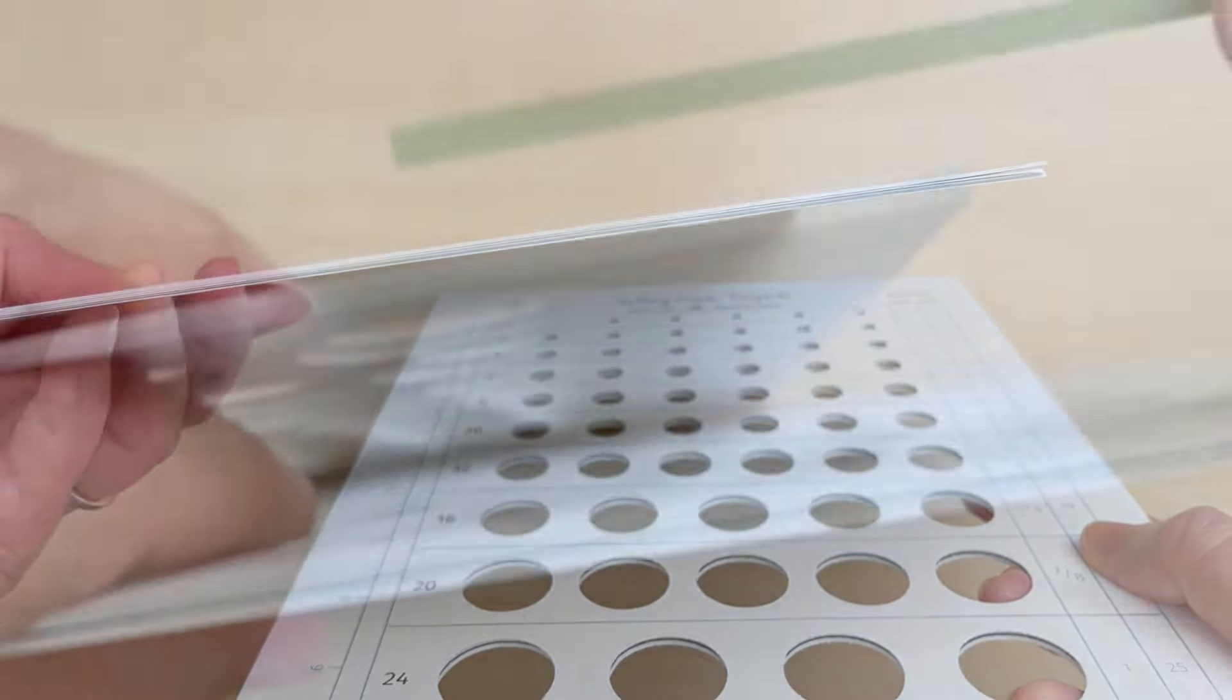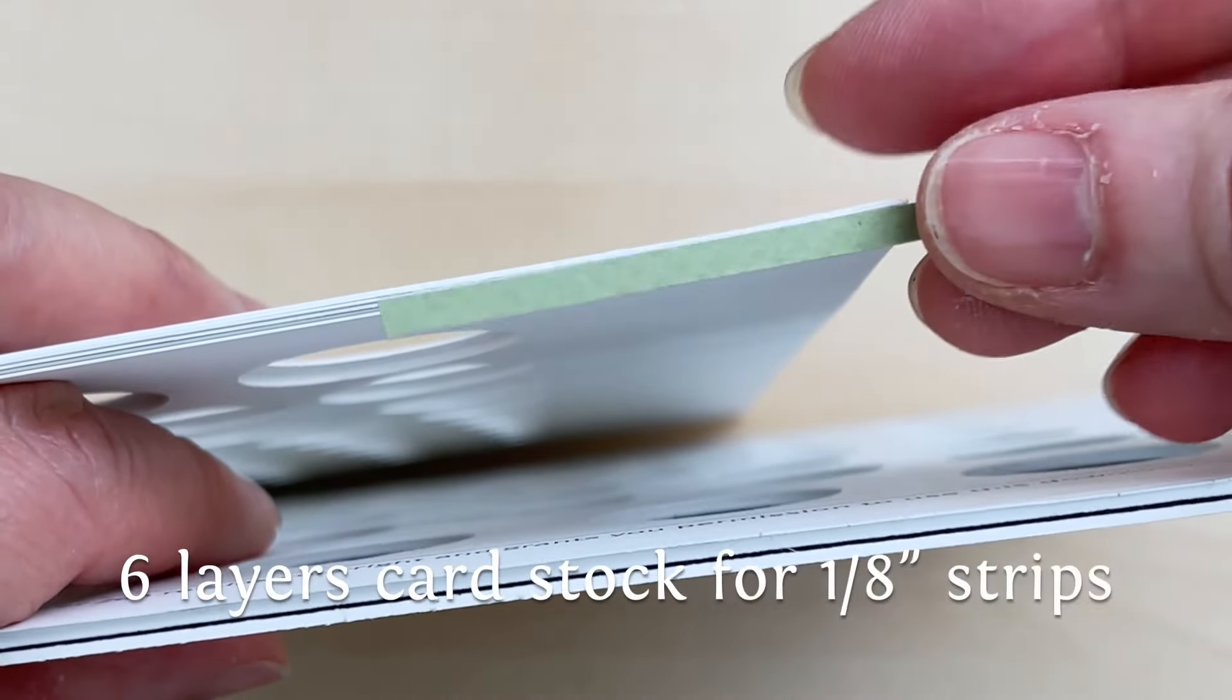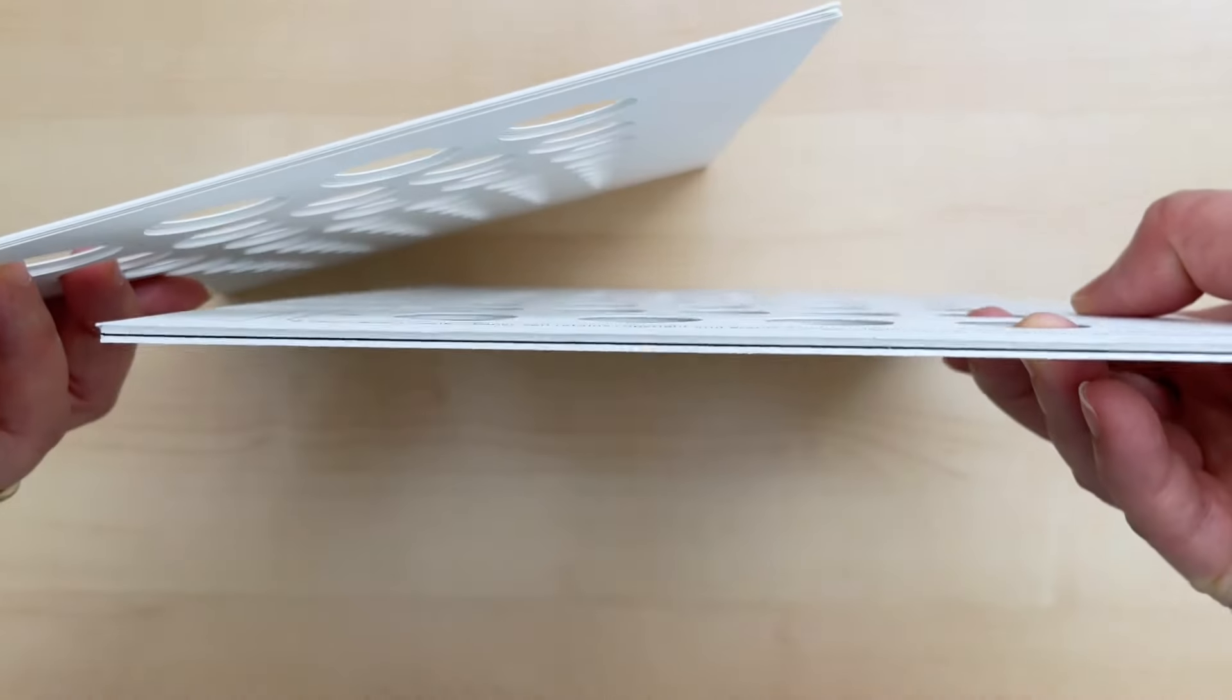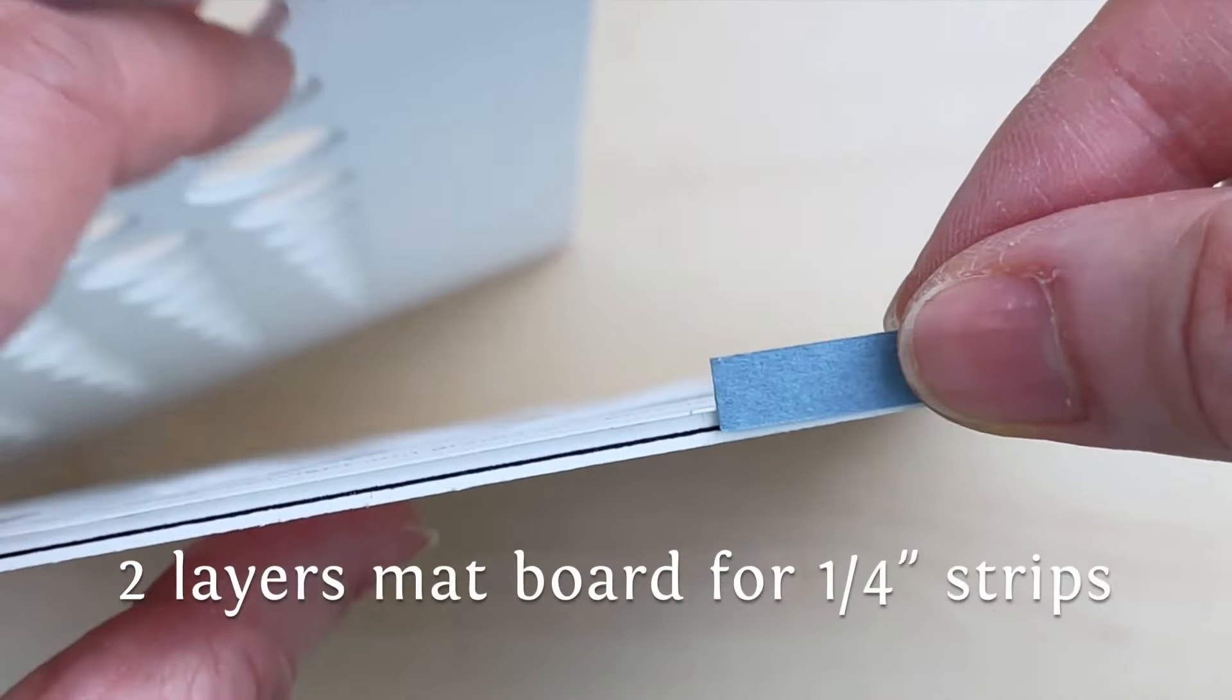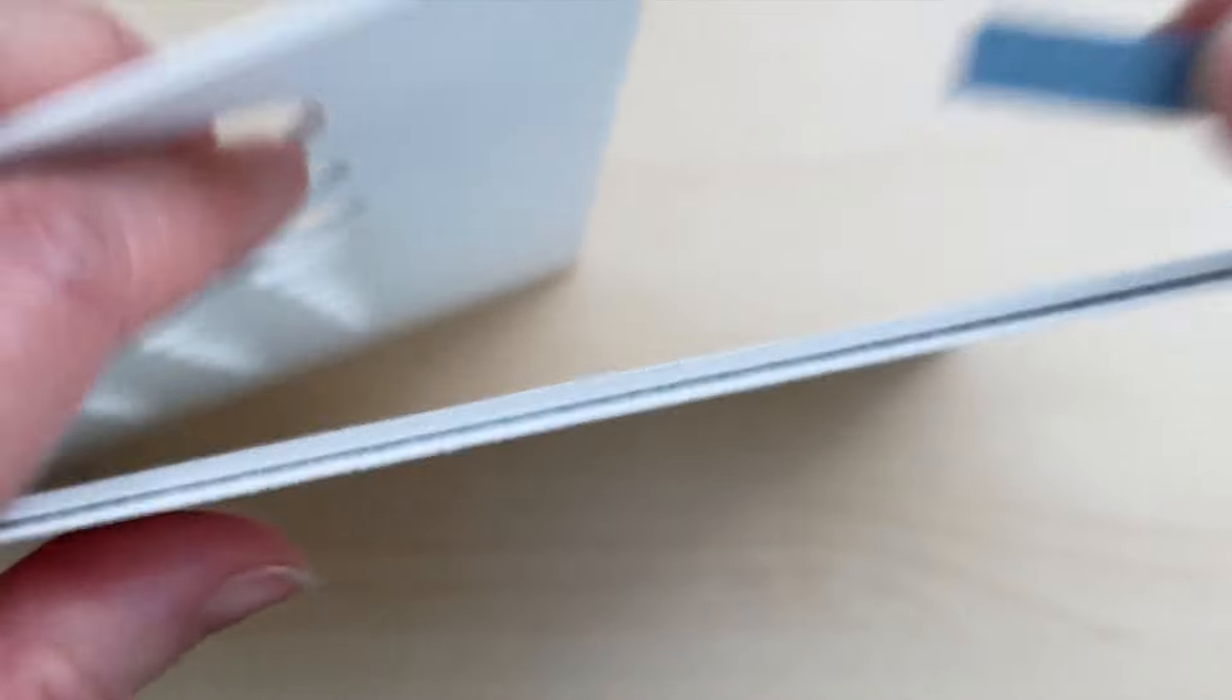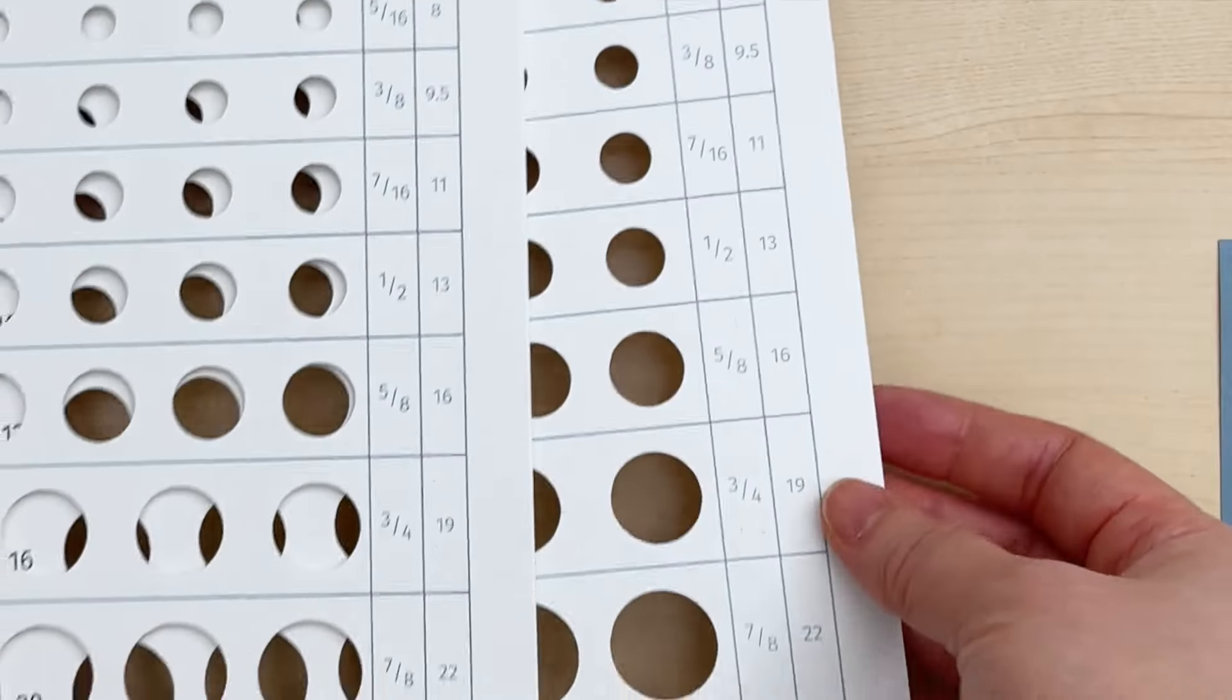I'm going to be using this one for my quilling strips that are one eighth inch in width. The template on the right is cut from two layers of mat board. I'm going to be using this thicker one for quarter inch width quilling strips.